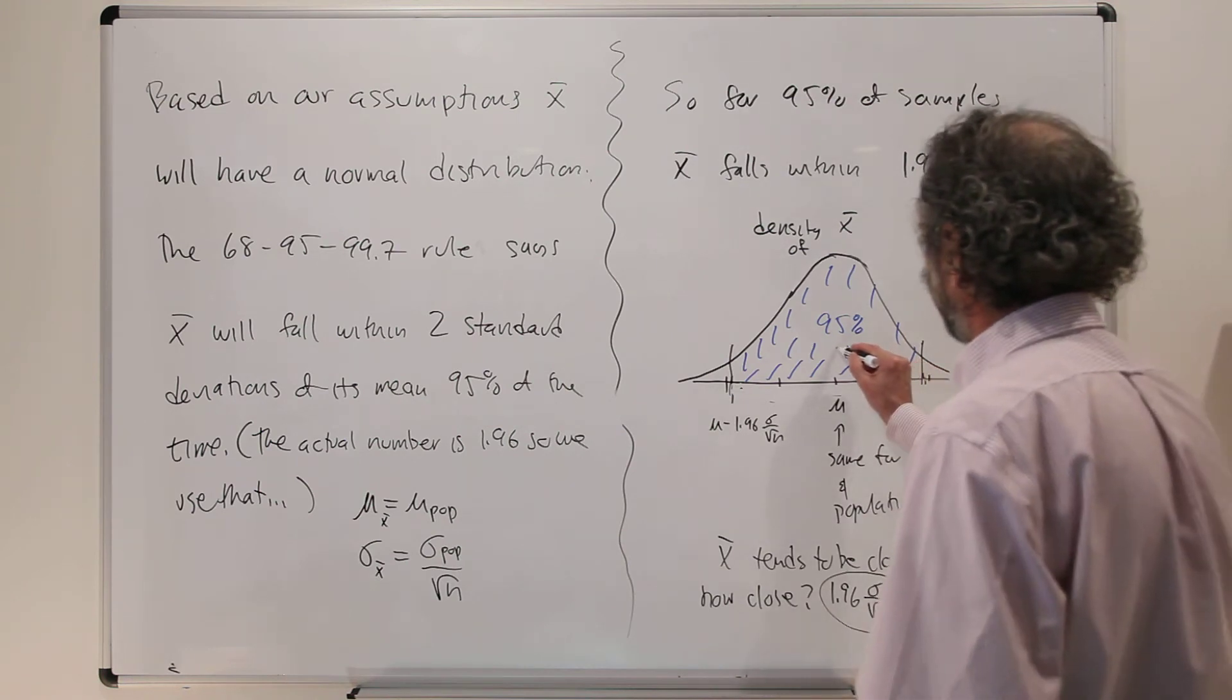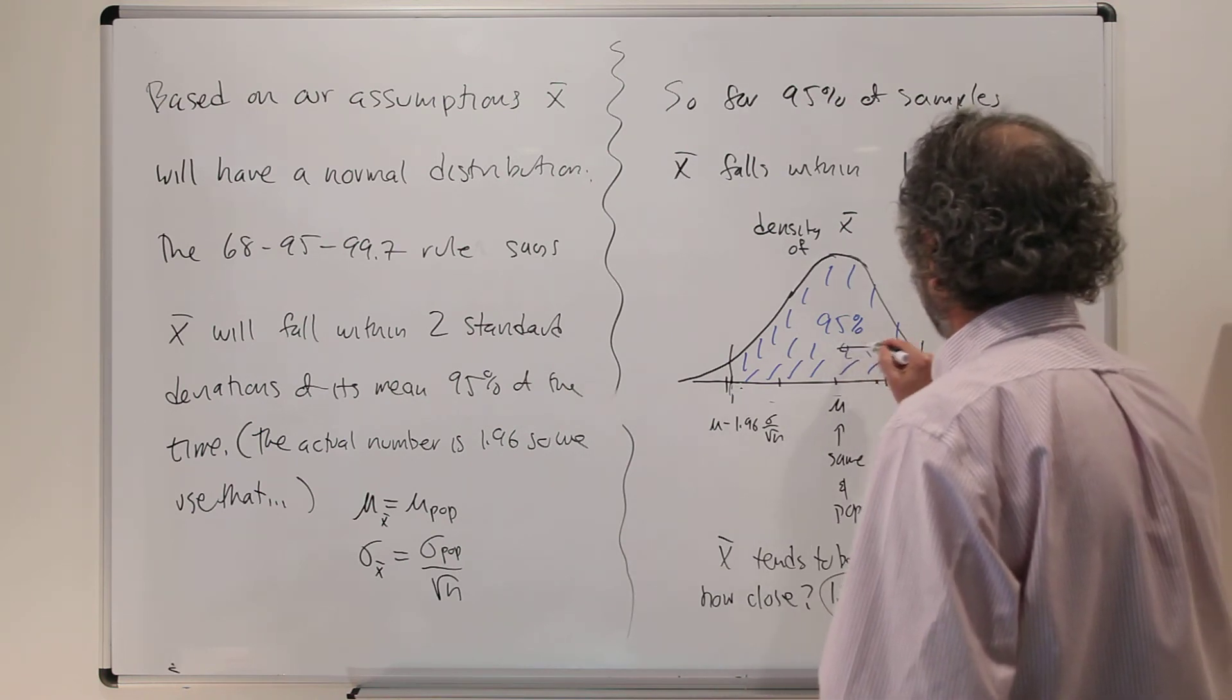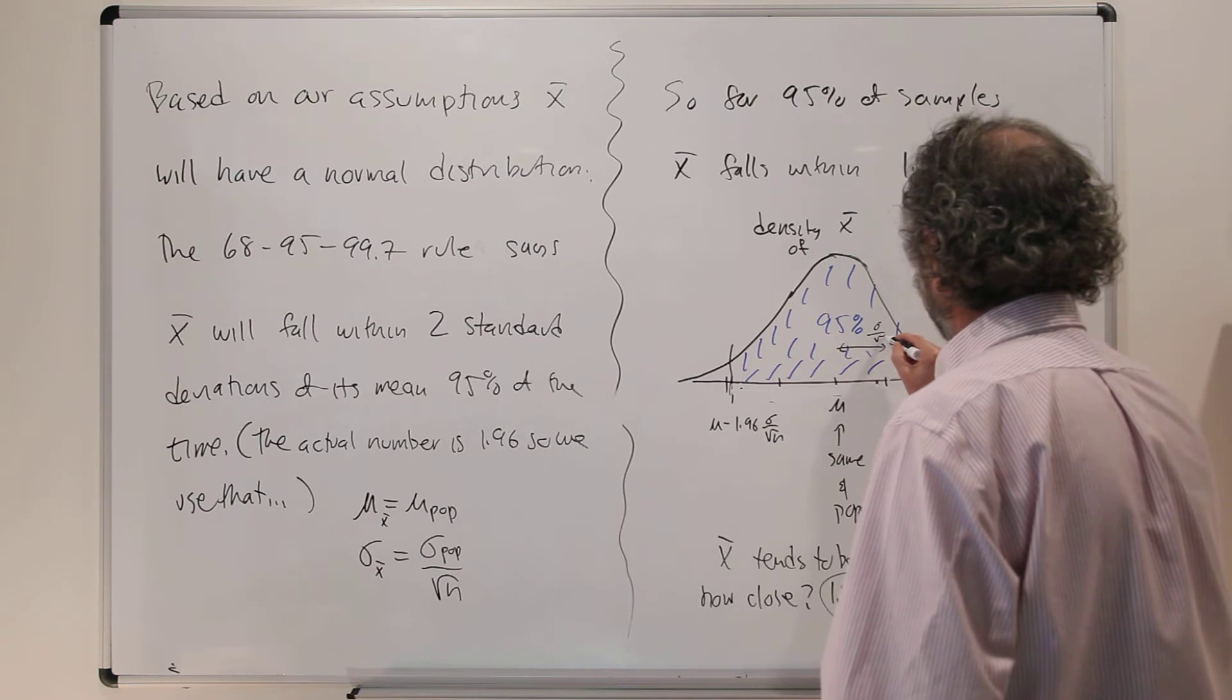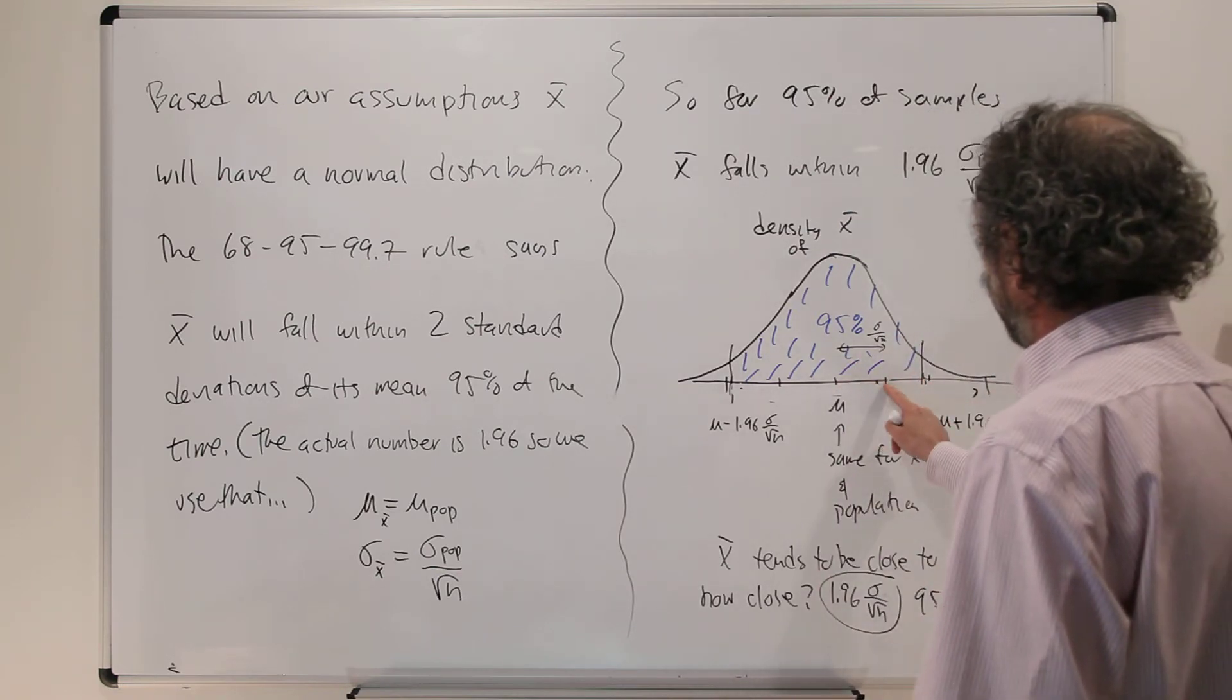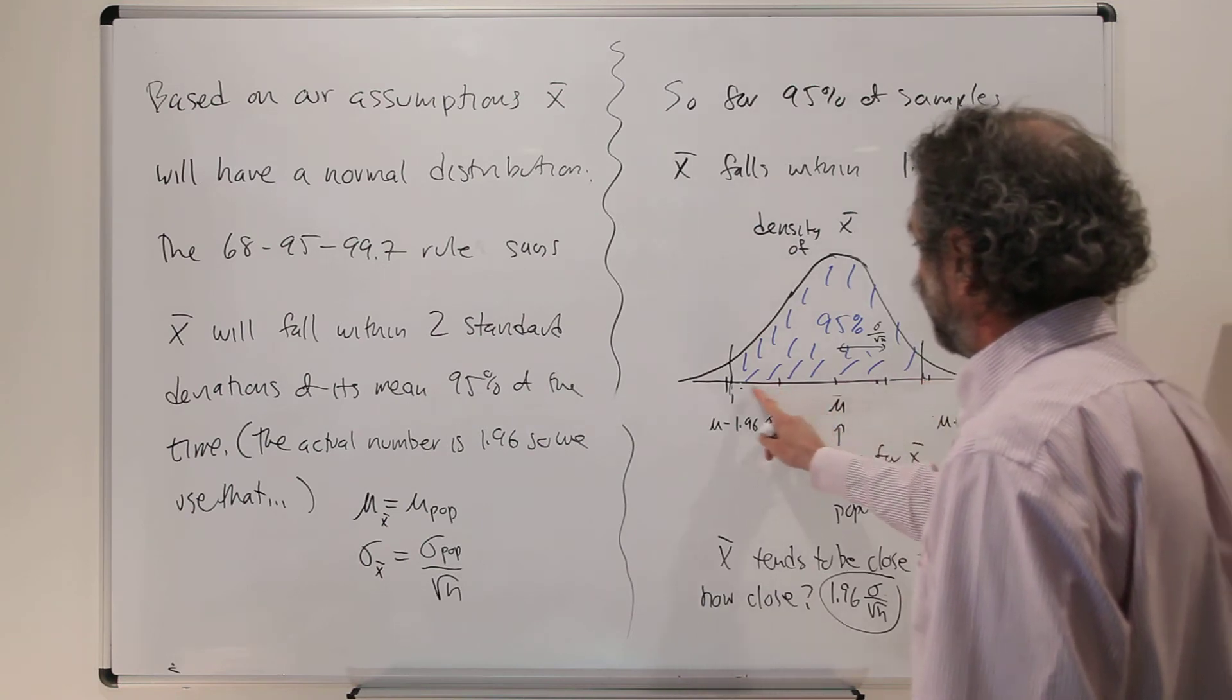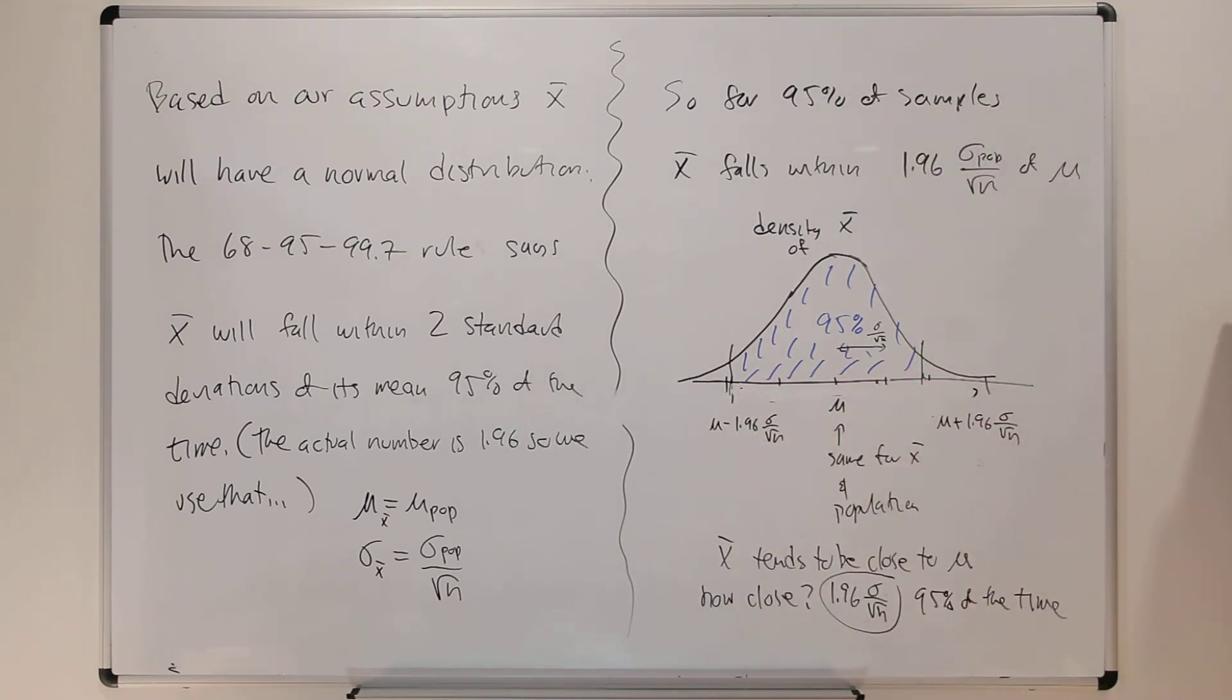So this distance here is sigma over root n. So if I go 1.96, there's almost two of those on each side of mu, and it will capture 95% of the values for x-bar.